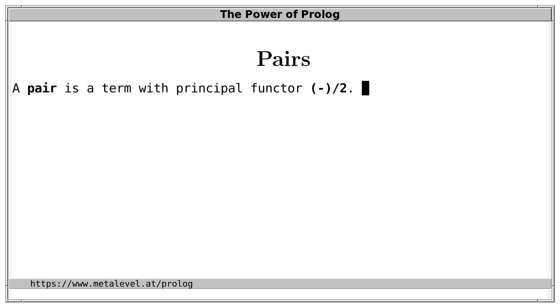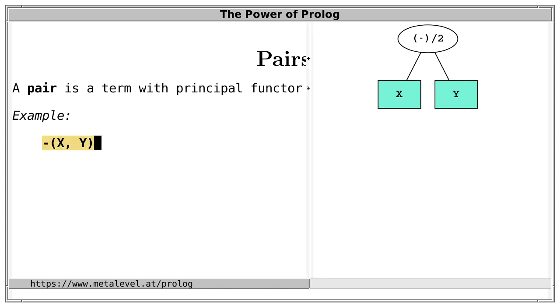In Prolog, a pair is a compound term with principal functor dash and arity 2. For example, dash of x and y, which is simply a term with two arguments, x and y, written in functional notation.